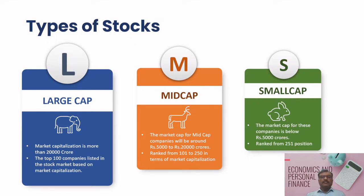Let's discuss the types of stocks available in the stock market. Stocks are categorized based on their market capitalization, which is calculated by multiplying the total number of shares of a company by its current stock price.